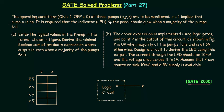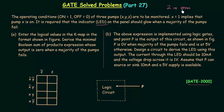The operating conditions of three pumps X, Y, and Z are to be monitored — whether they are on or off. On means one and off means zero, so X equal to one implies pump X is on. It is required that the LED indicator on the panel should glow when a majority of pumps fail, meaning two or more pumps fail.